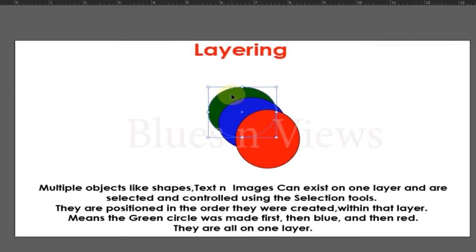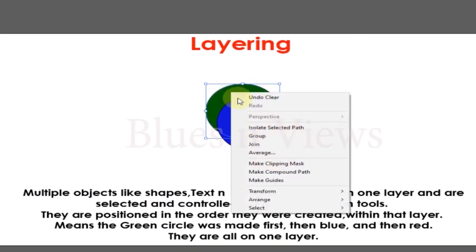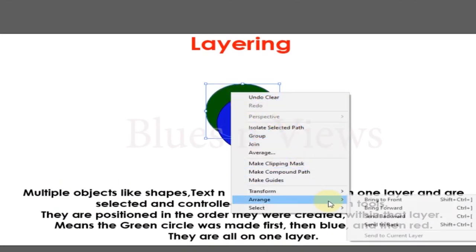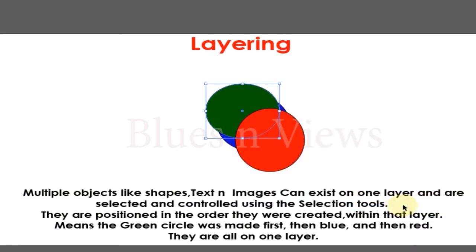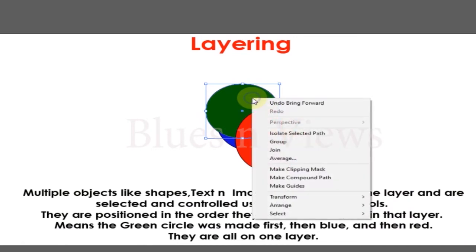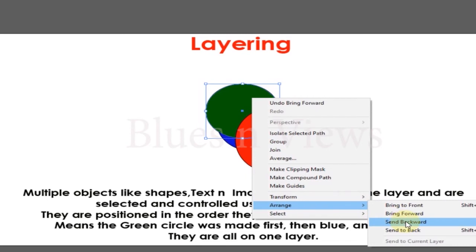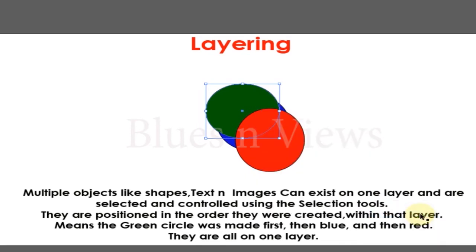Click Object, then Arrange. This will open a drop-down menu. Here you can choose to move your object either up or backward one level, or move it all the way to the front or all the way to the back.